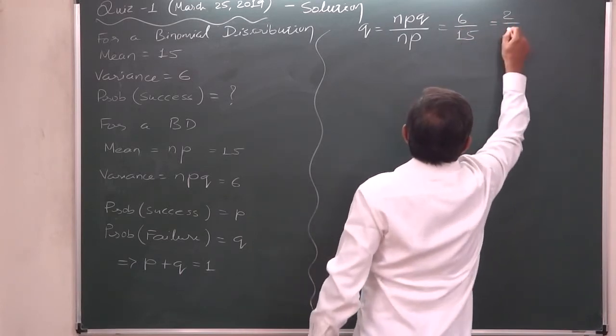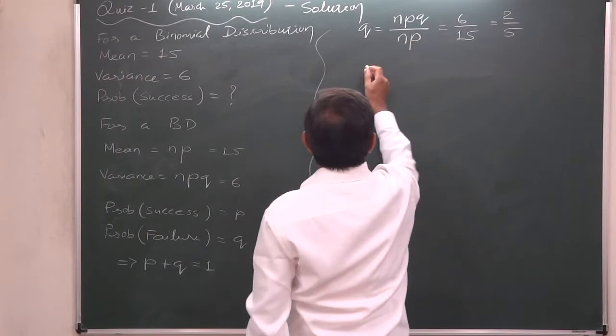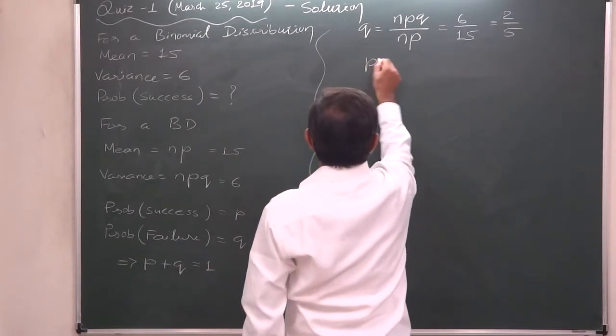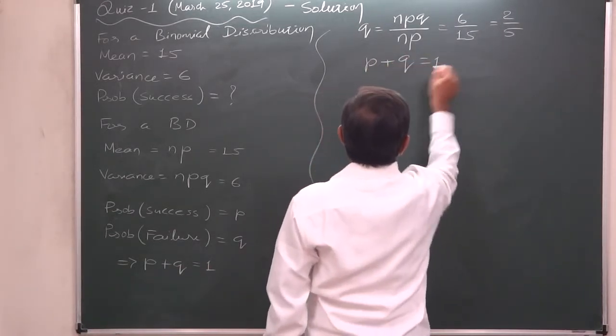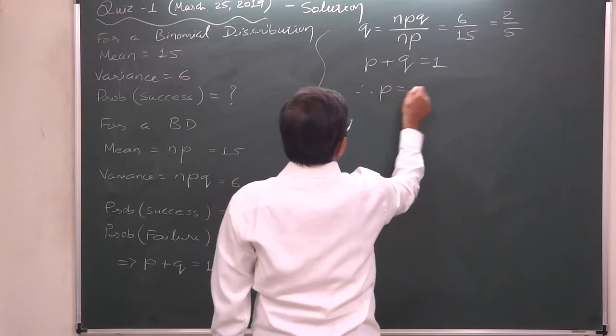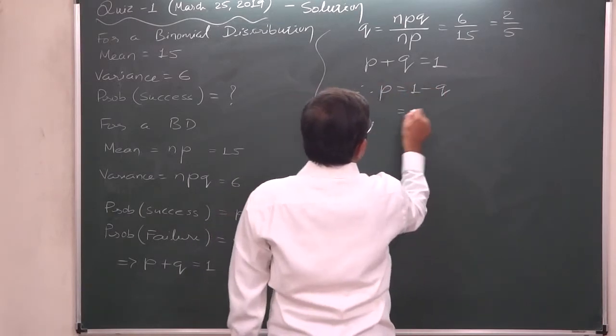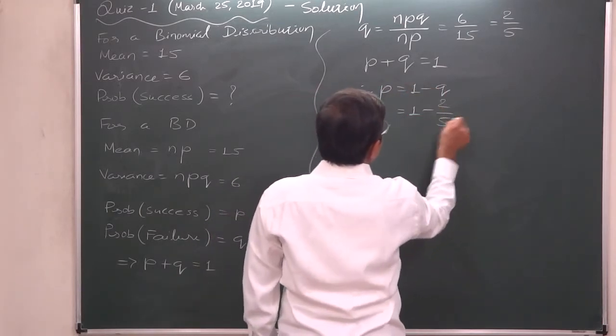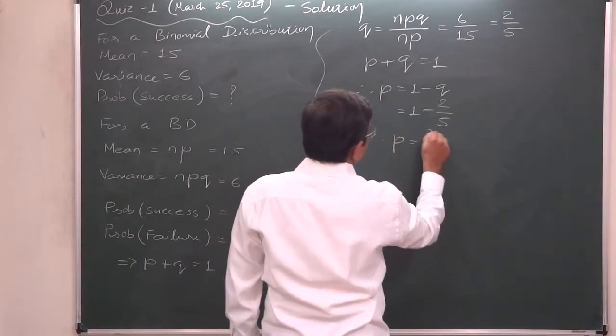So, Q or probability of failure comes to 2 by 5. And now, take this relationship: P plus Q equals 1. That means P equals 1 minus Q, that is 1 minus 2 by 5. So, P comes to 3 by 5.